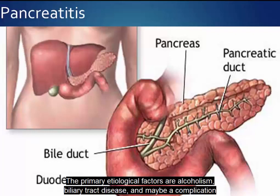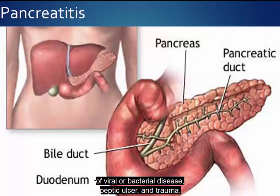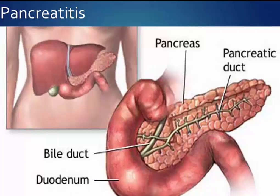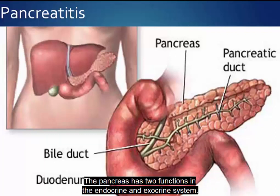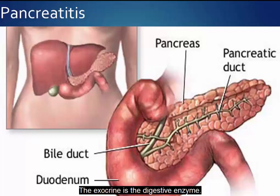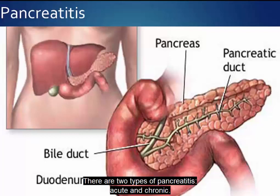The primary etiological factors are alcoholism, biliary tract disease, and may be a complication of viral or bacterial disease, peptic ulcer, and trauma. The pancreas has two functions: endocrine, which is the production of insulin, and exocrine, which is the production of digestive enzymes. There are two types of pancreatitis: acute and chronic.